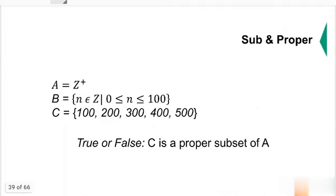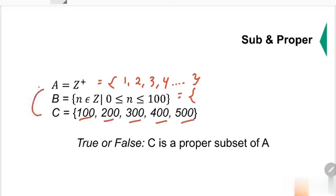C is a proper subset of A. C is 100, 200, 300, 400, 500. Can they all be found in A? Of course. Because this is all the positive integers. So you can be sure that these numbers are inside set A. So this is true. Because set A also contains other numbers besides 100, 200, and so on.